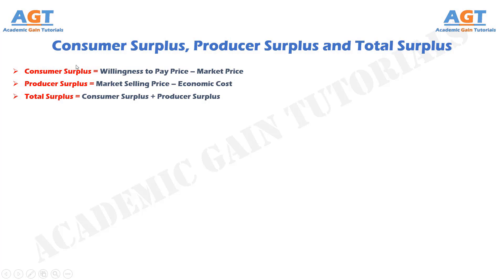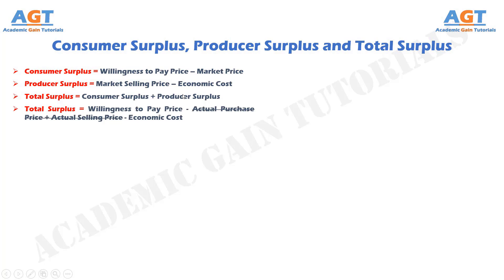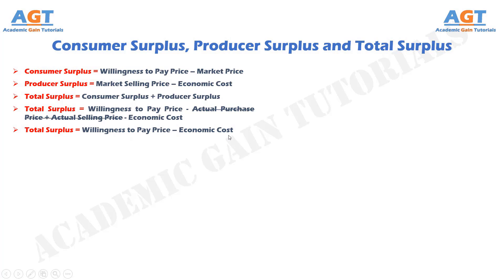Since the price paid is a positive term in the producer surplus and a negative term in the consumer surplus, the price paid is cancelled out, resulting in the following equation for total surplus. Thus, total surplus equals willingness to pay price minus actual purchase price plus actual selling price minus economic cost, which simplifies to total surplus equals willingness to pay price minus economic cost.